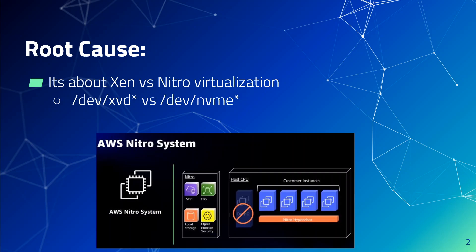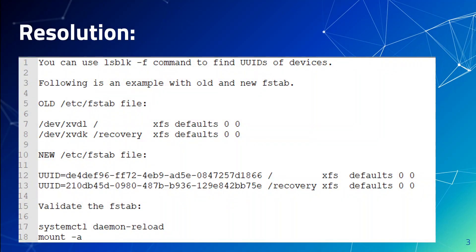Before you do this upgrade to a different family, you need to make the instance Nitro compatible. The way you do it is to update your /etc/fstab file to use UUID instead of device names. First, you need to find out the UUID of your devices, and you can use the lsblk -f command to find that out.